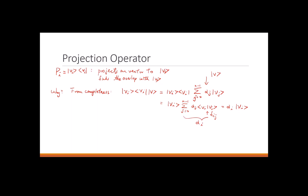So by applying the projection operator P_I to V, I get exactly the component I want. It tells me how much component of |v_i> I have, for any vector.